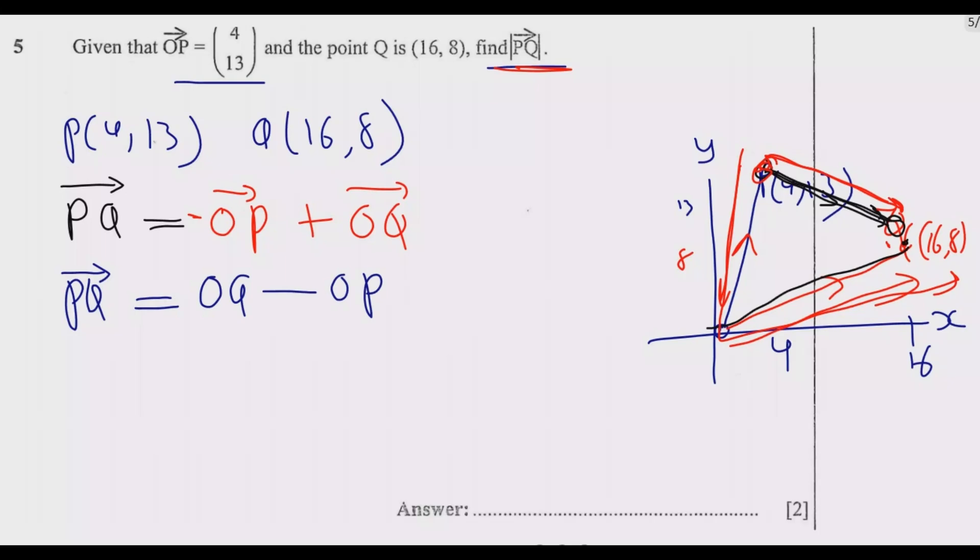What is OQ? So I can use this one as the column vector, so in the column vector, this is the same as (16, 8), like this. So (16, 8) then minus OP which is (4, 13). So at this point we just simplify. We are going to have 16 minus 4 which is 12, then 8 minus 13 which is negative 5.